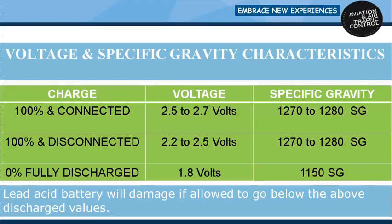The voltage and specific gravity figures for a lead acid battery: when 100% fully charged and still connected to the charging board, it will show 2.5 to 2.7 volts and specific gravity of 1270 to 1280. When 100% fully charged and off charge, it will show 2.2 to 2.5 volts with specific gravity of 1270 to 1280. When fully discharged at 0%, specific gravity will be 1150. The battery will be damaged if allowed to go below the above discharge values.